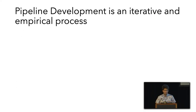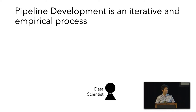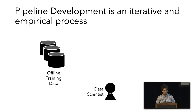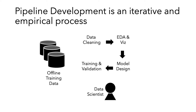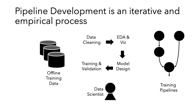Zooming in on the first phase: pipeline development is an iterative and empirical process. A data scientist works with a snapshot of offline training data — first shaping it through cleaning and pre-processing, gaining insight into correlations between columns, and identifying extreme outliers. Once through this tedious and time-consuming process, it's time for model design: decisions like whether to use a naive Bayes classifier or a neural network, how many neurons per layer, how many layers. Then we train and validate those decisions, resulting in a training pipeline that automates much of the work.